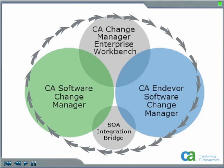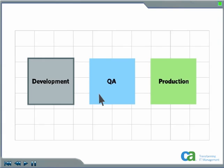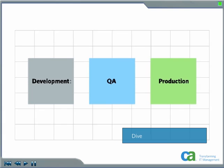The benefits of CA Endeavor Software Change Manager are diverse and effective. This management pack expedites software development through the entire software lifecycle by allowing programmers to move any aspect of development from one phase to another with a single click.